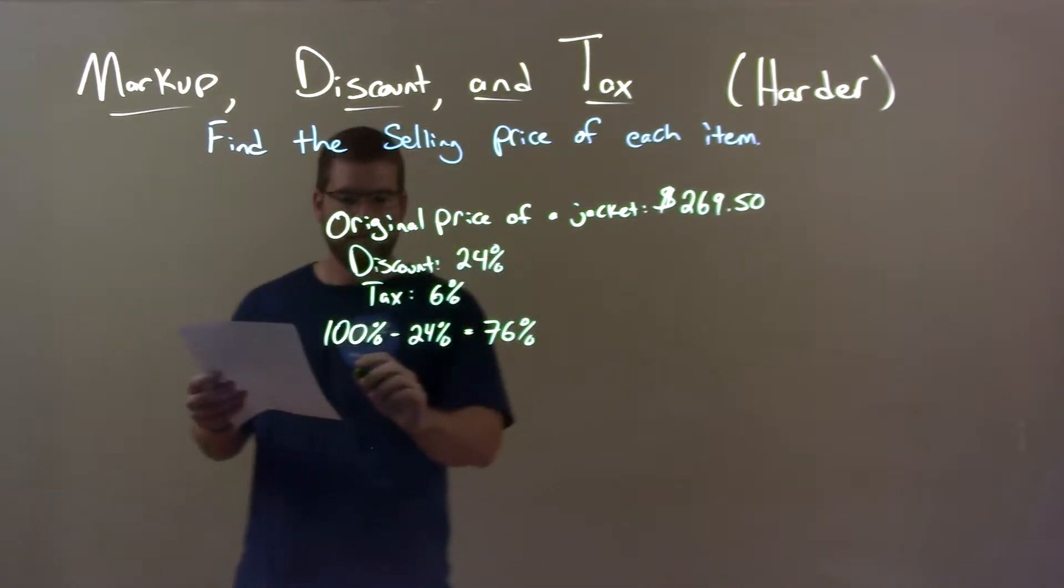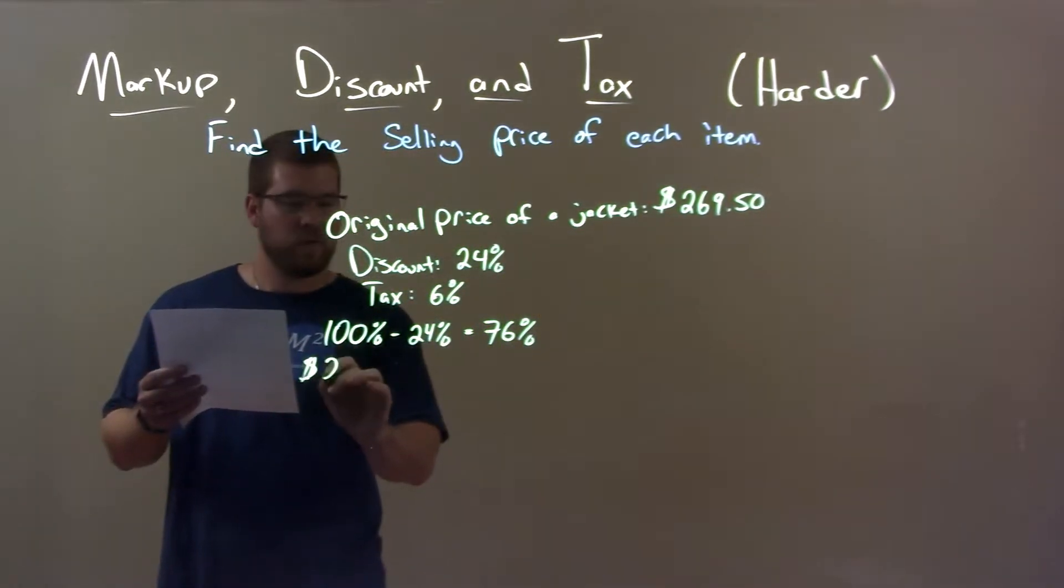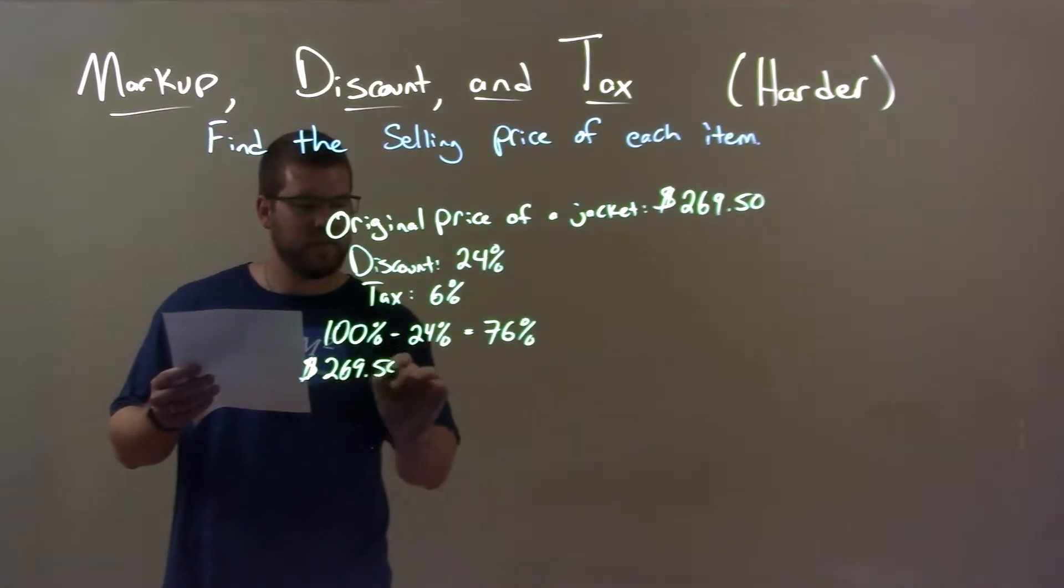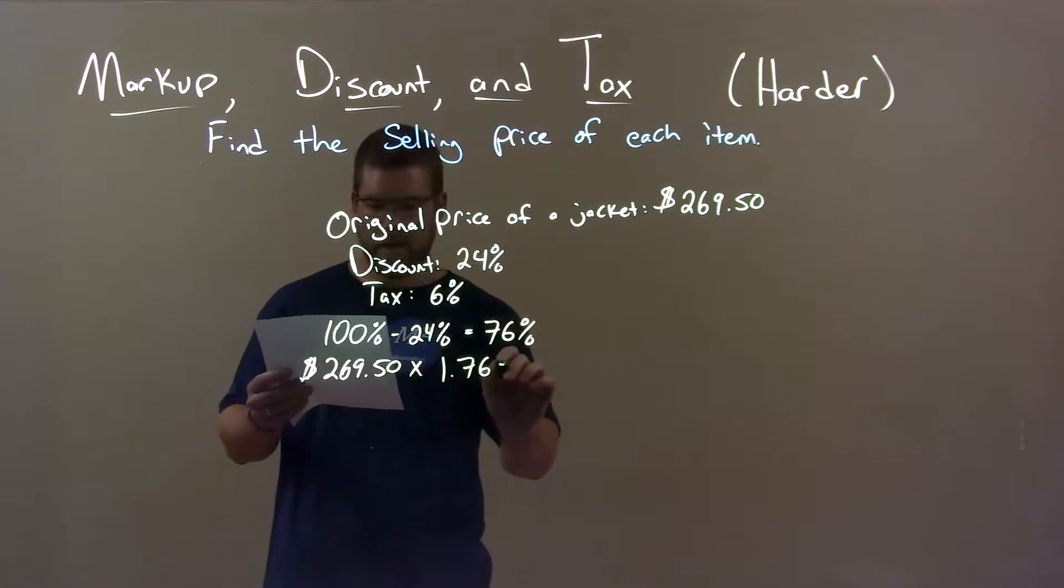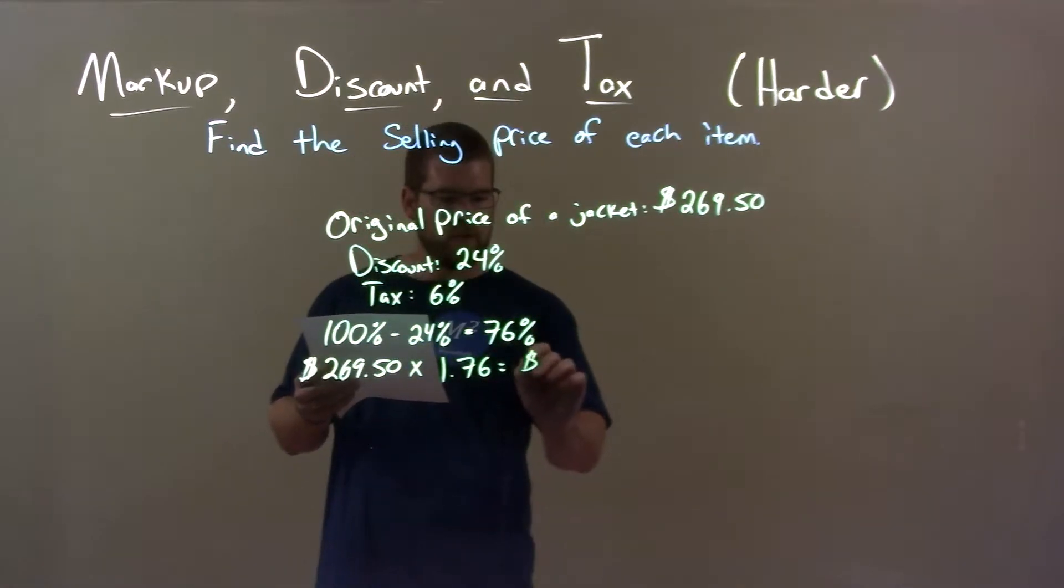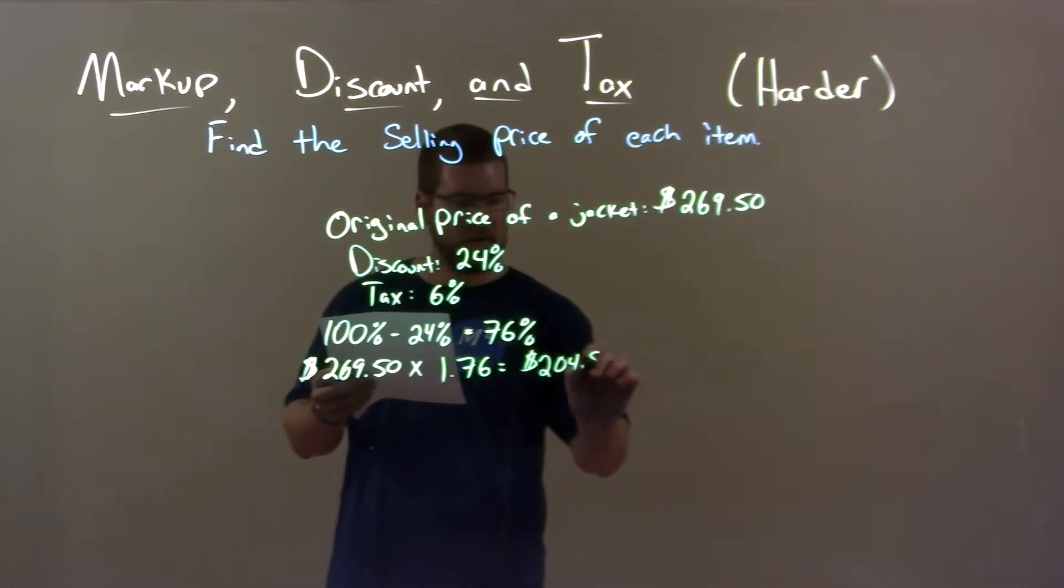So to get that in number terms, we take $269.50 and multiply that by 76% as a decimal, 0.76, and get a value of $204.82.